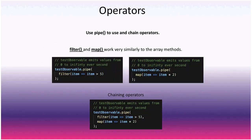For operators, use pipe to chain them — this is new in RxJS 6. Given an observable emitting values zero to infinity every second, using filter with item greater than five means it ignores the first six emissions and begins accepting at six. Using map instead emits every item times two: zero, two, four, six, eight. You can also chain them — combining filter and map, starting at six it emits each item multiplied by two.